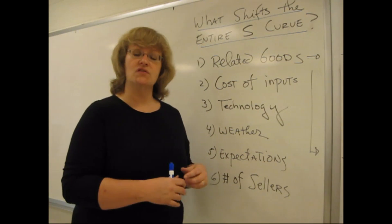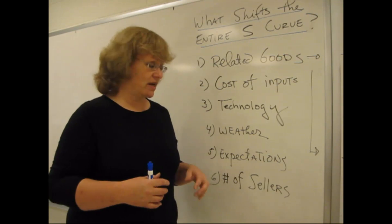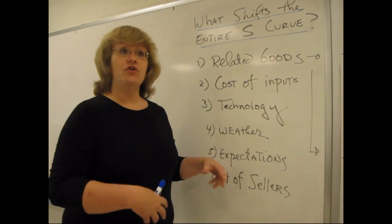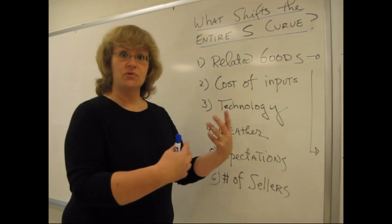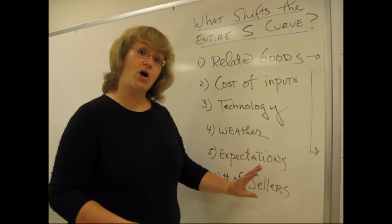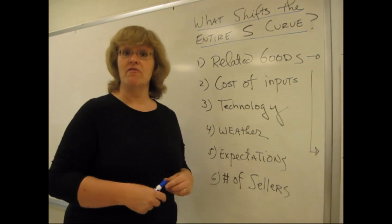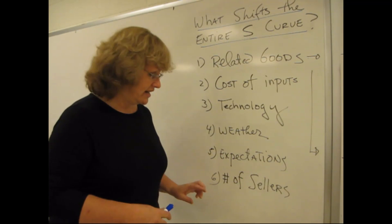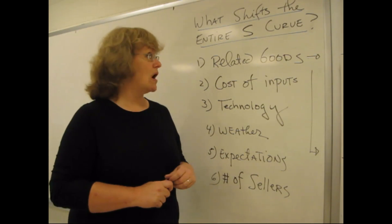like high-definition televisions, there might be only one or two suppliers in the market. As the good kind of catches fire and people start to buy it and desire more of them, the number of sellers will grow and the number of goods available at every price will change. So the supply curve can shift to the right as the number of sellers increase as well.